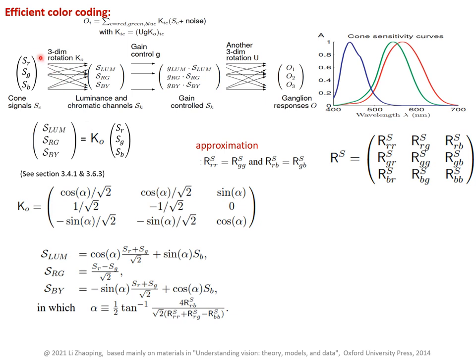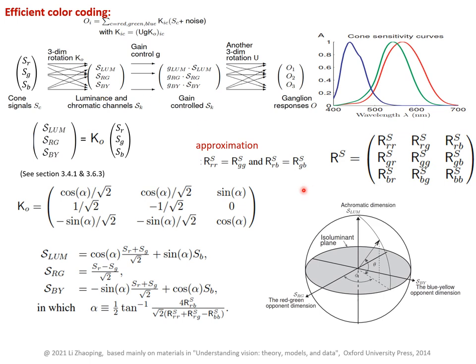Therefore, any RGB input stimulus can be expressed in terms of three independent components by projecting them onto three orthogonal axes: one is the luminance axis, one is the red-green opponent dimension, and the other is the blue-yellow opponent dimension. One luminance and two opponent channels are often seen in experimental data, and in the literature many signals are expressed this way. These three directions are often called the three cardinal directions.